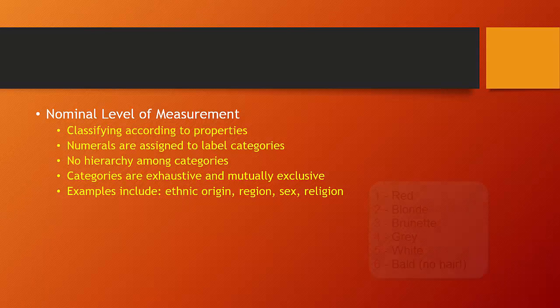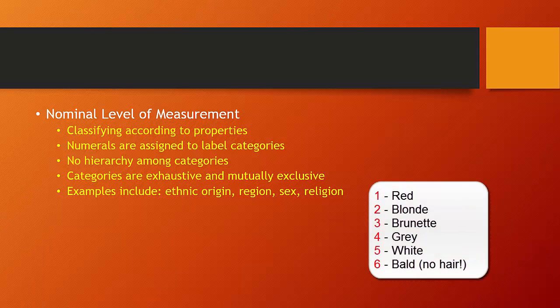If I had a number assigned to hair color, for example, and I had one was red, two was blonde, three was brunette, four was grey, five was white, and maybe even six for bald, they have no hair, then by assigning numbers to these categories, all I'm doing is providing numbers to help the computer keep it organized which category is which.